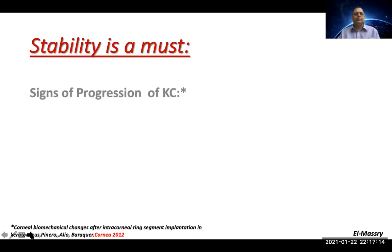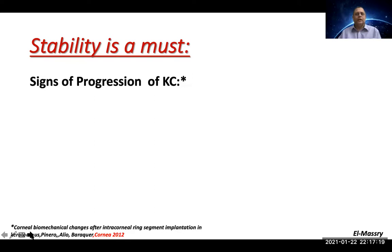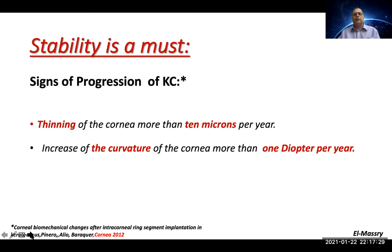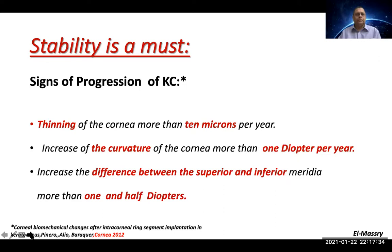If the patient is above age 30, there is still debate whether to cross-link. Mostly these patients have natural stability as the cornea becomes stiffer with age, and there may be no need for cross-linking — just follow up with pentacam every six months. If there is progression, we must fix the cornea before doing anything. Stability is a must. Signs of progression include: corneal thinning more than 10 microns per year, increase in curvature by one diopter per year, and increase in superior-inferior meridian difference of more than 1.5 diopters.